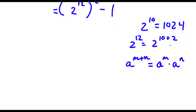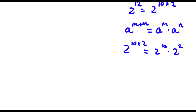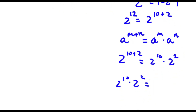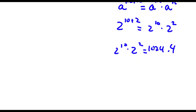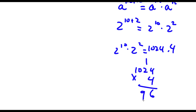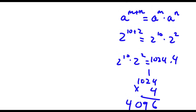So in this case, 2 to the power of 10 plus 2 is equal to 2 to the power of 10 times 2 to the power of 2. Now 2 to the power of 10 is 1024, and 2 to the power of 2 is 4. So I have 1024 times 4. Computing that: 4 times 4 is 16, 4 times 2 is 8, 8 plus 1 is 9, 4 times 0 is 0, and 4 times 1 is 4. So I have 4096.